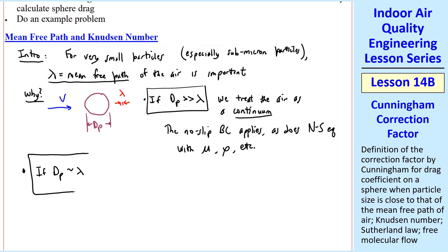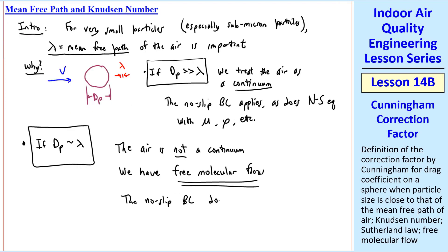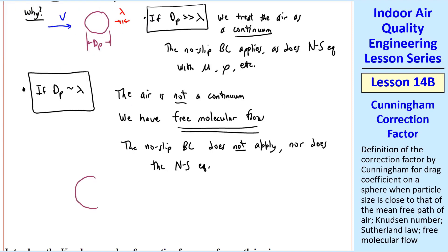But what happens if dp is of the same order of magnitude as lambda? Then the air is not a continuum. Instead, we have what's called free molecular flow, and the no-slip boundary condition does not apply, nor does the Navier-Stokes equation.